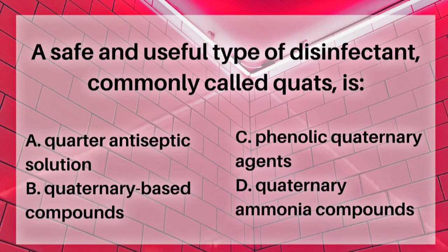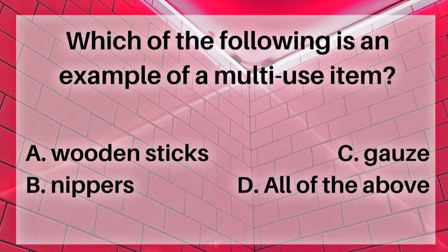A safe and useful type of disinfectant commonly called quats is: A. Quarter antiseptic solution, B. Quaternary base compounds, C. Phenolic quaternary agents, or D. Quaternary ammonia compounds. The answer is D. Quaternary ammonia compounds, better known as quats.